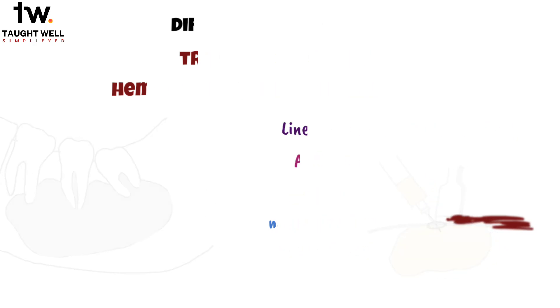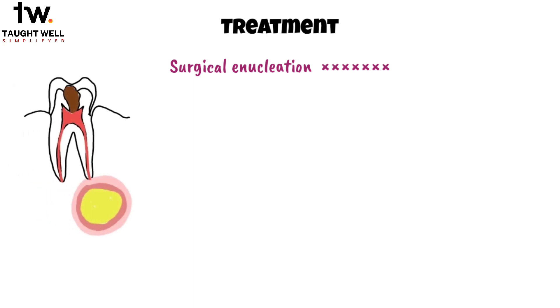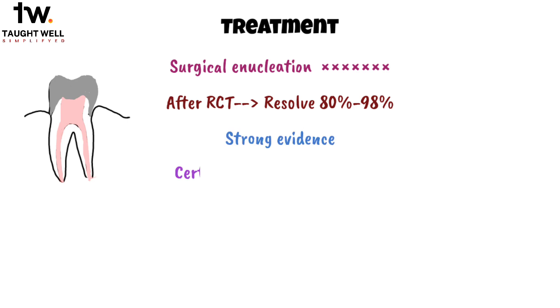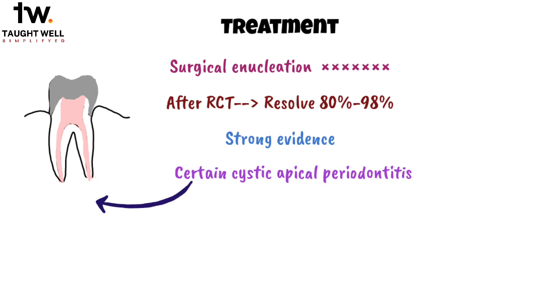Moving on, let's discuss the treatment of an apical cyst. Surgical enucleation of apical cysts isn't always required. In fact, the majority of cases see these areas of rarefaction resolving after root canal therapy, in a significant percentage ranging from 80% to 98%. Clinical studies on both successful and unsuccessful cases provide strong evidence that certain cystic apical periodontitis conditions can heal following non-surgical endodontic treatment.